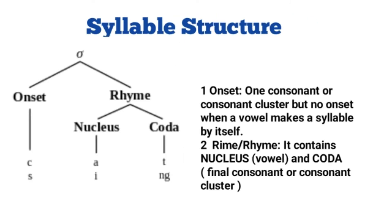Now, a more detailed structure of a syllable. A syllable can be divided into two parts: onset and rhyme. Rhyme is further divided into nucleus and coda. Onset means one consonant or consonant cluster, but there is no onset when a vowel makes a syllable by itself. Rhyme — spelled R-I-M-E or R-H-Y-M-E — contains the nucleus (the vowel) and the coda (final consonant or consonant cluster).